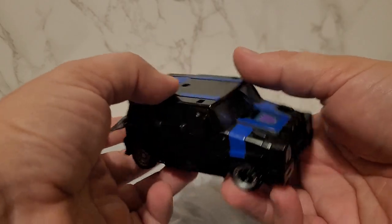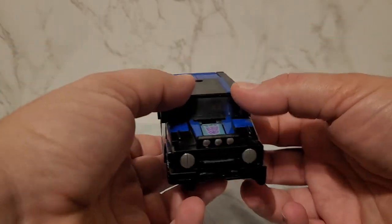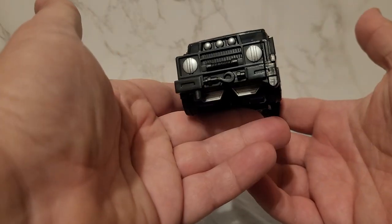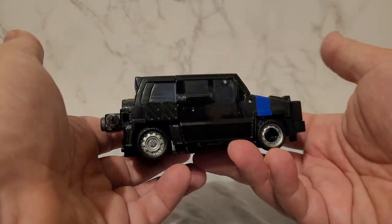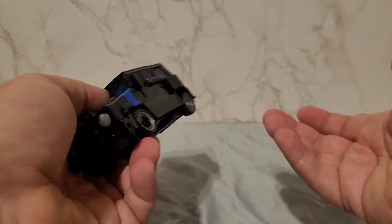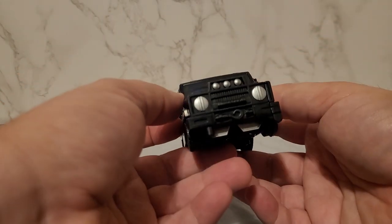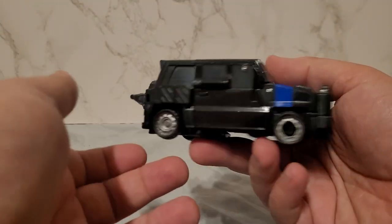Here he is in his vehicle mode based off his G1 appearance, which was a Land Rover apparently. He does roll quite well, which is good, and that's about it.